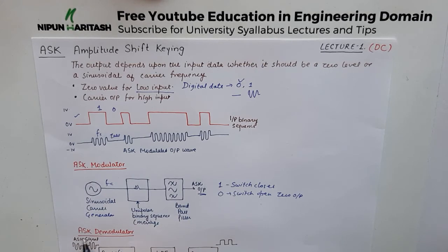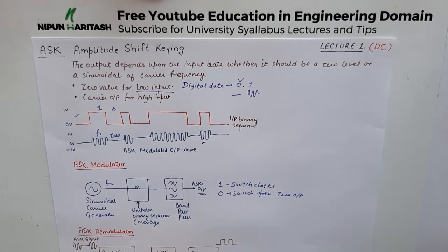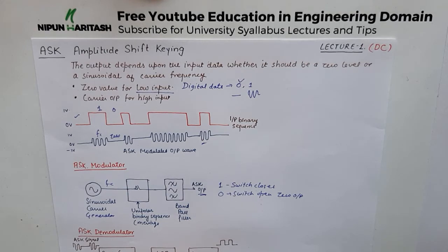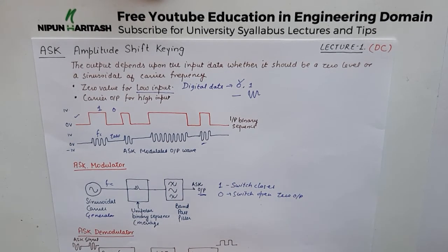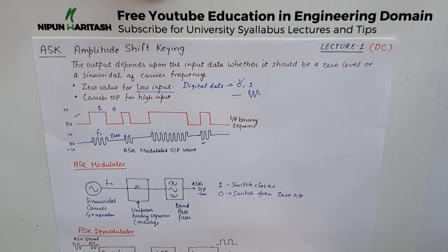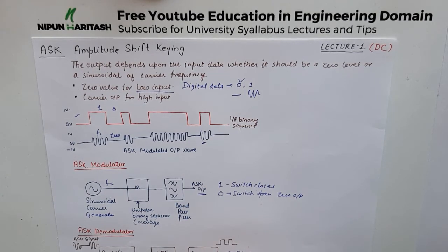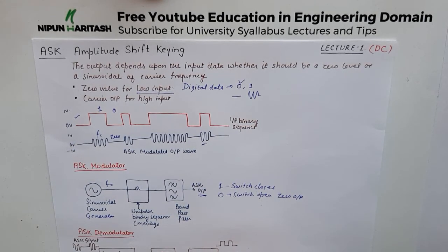Finally we have the ASK demodulator, which is even simpler. We send the ASK signal to the rectifier — it rectifies it and gives this kind of output, clipped on the positive side only. Then we pass it through the low-pass filter to get the desired digital output. This is a comparator that compares the threshold to decide whether it's a zero or a one.